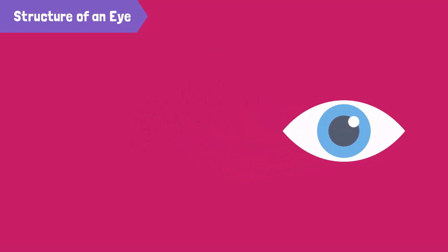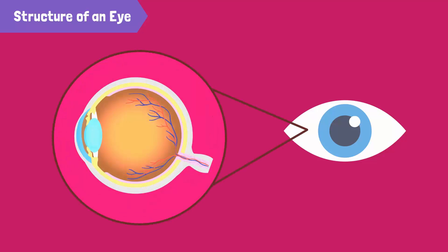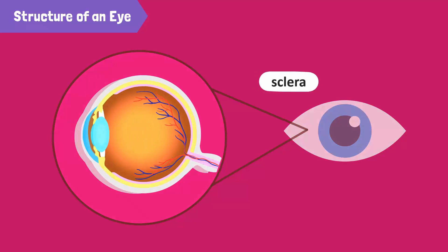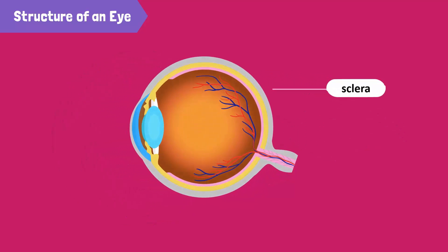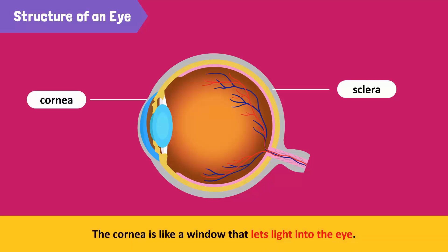Let's take a closer look at the eye's structure. The outermost layer forms the white part of the eye, called the sclera. The transparent front part of the sclera is called the cornea. The cornea is like the window that lets light into the eye.